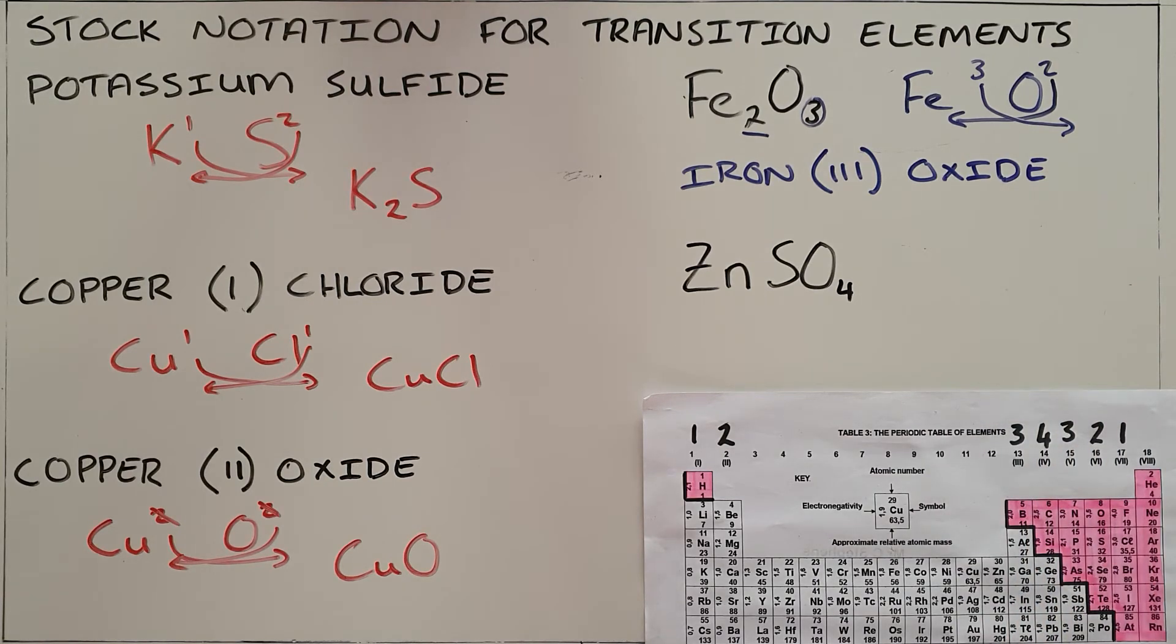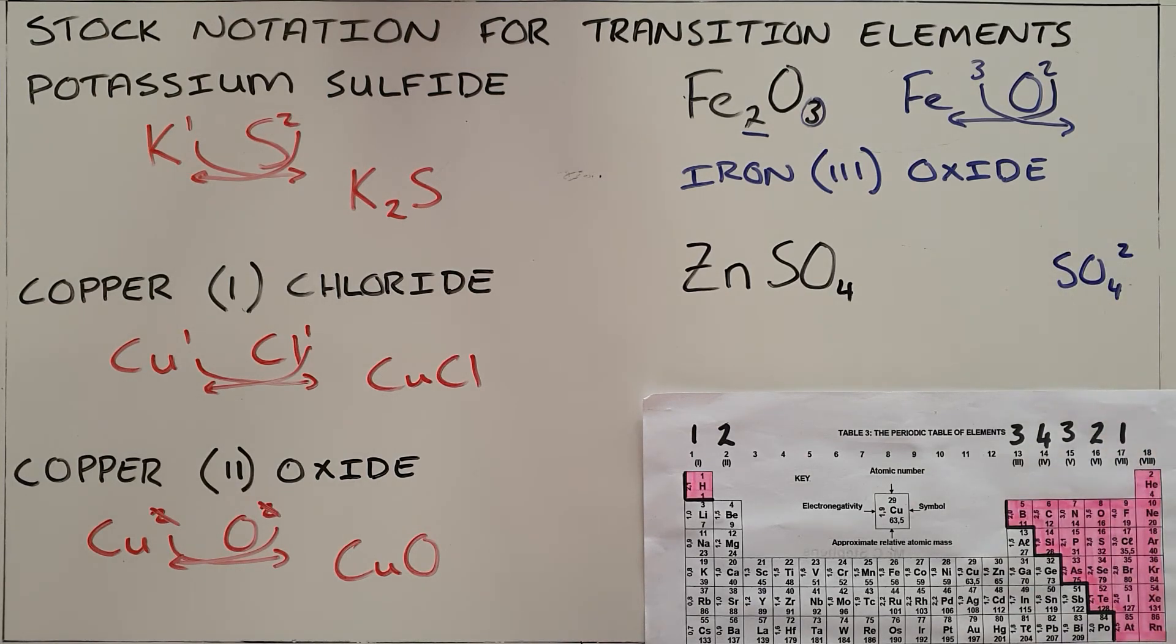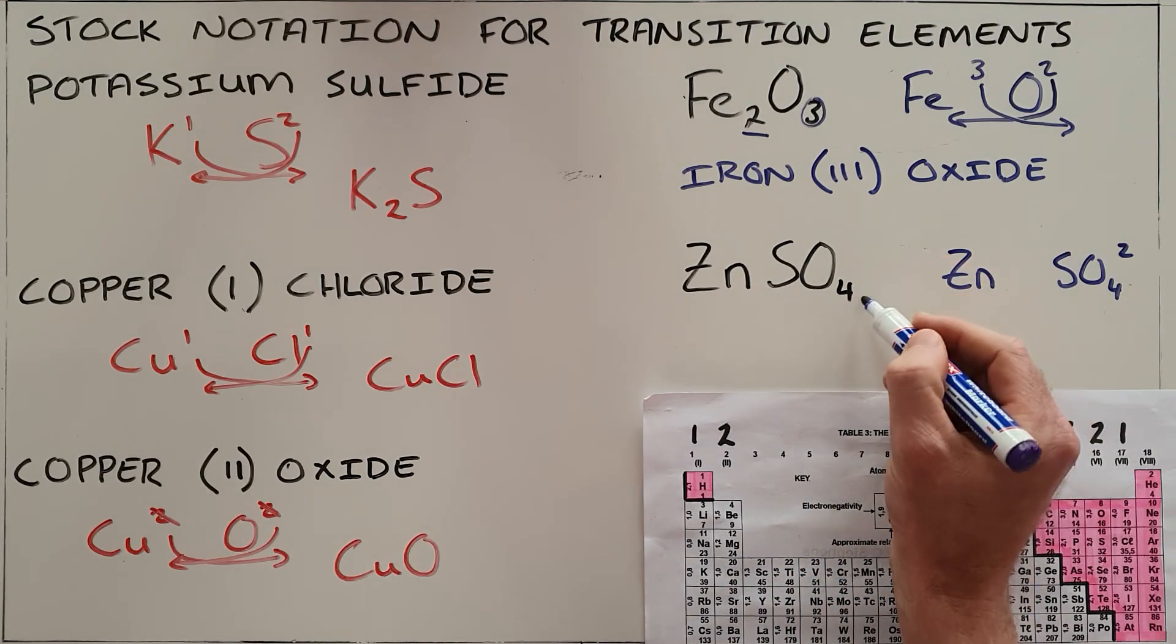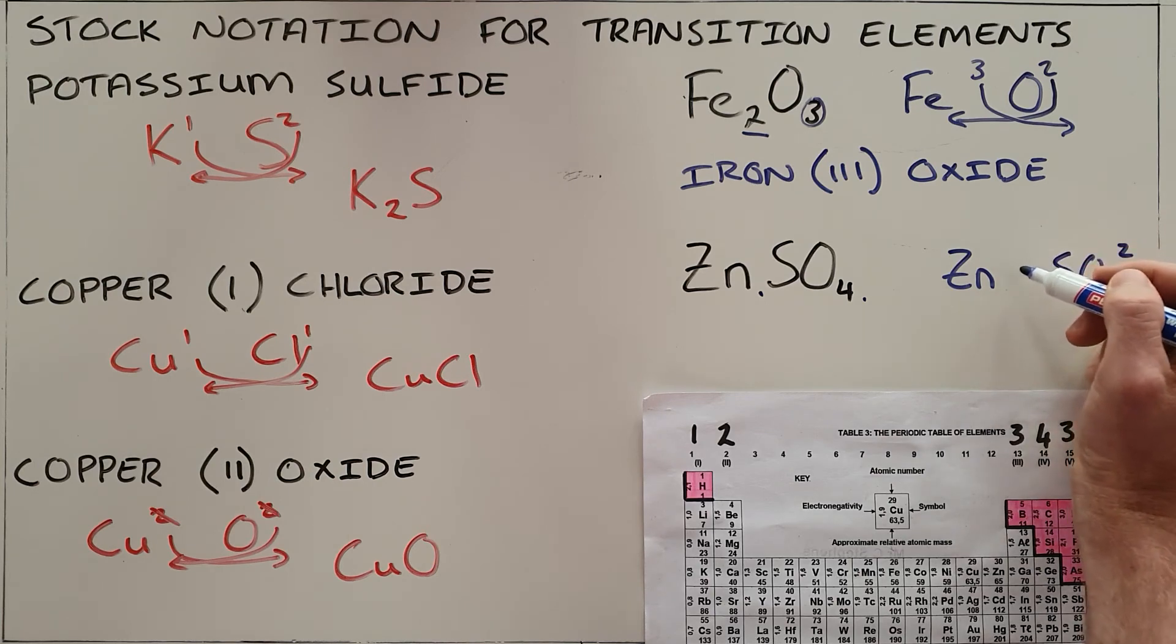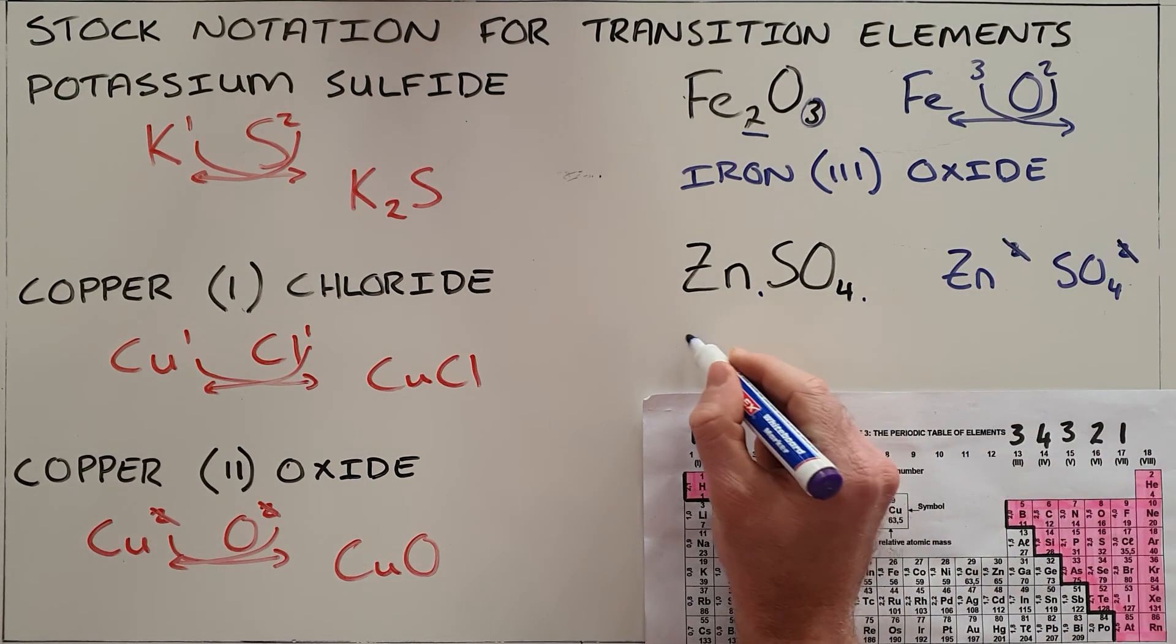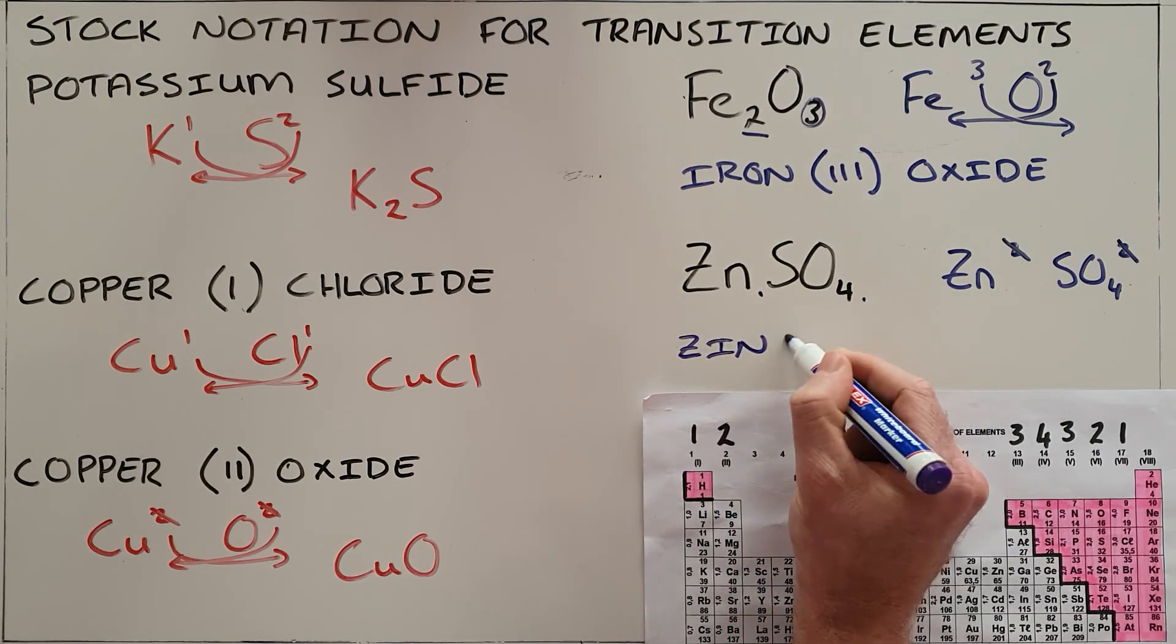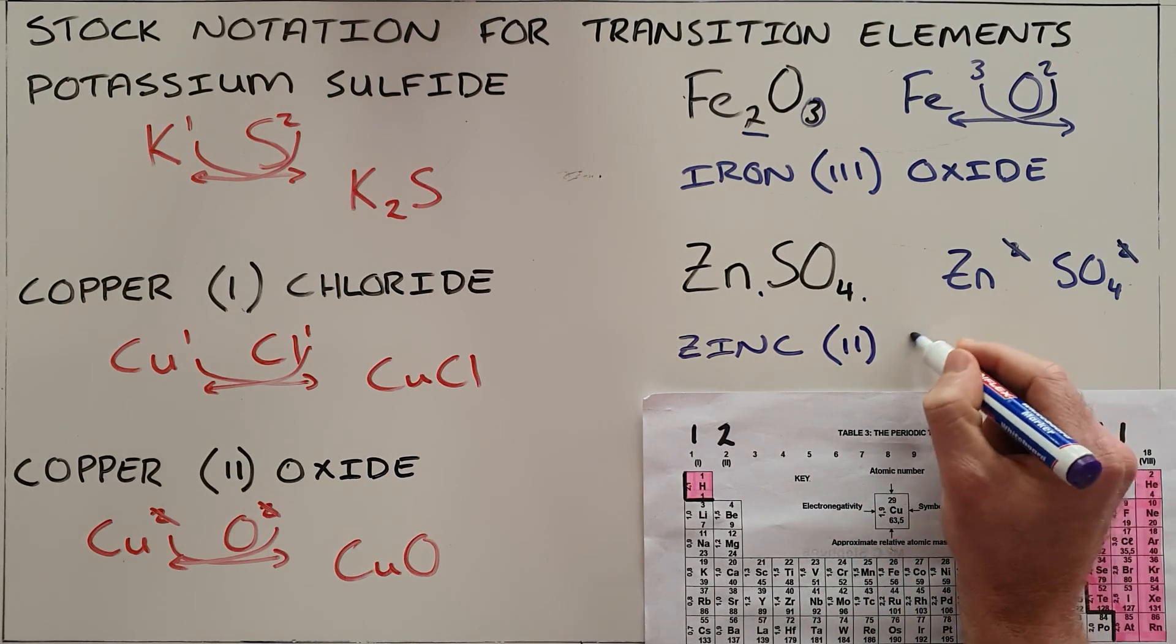And then the most complicated way in which this can be asked is something like zinc sulfate. Once again we know that sulfate has a valency of 2. We do not know the valency of zinc because it is a transition element, but what we can see here is that neither of these have numbers down here, which means that zinc must have a valency that is the same as sulfate so that they can cancel out and simplify. This means that the correct name for zinc sulfate would be zinc(II) sulfate.